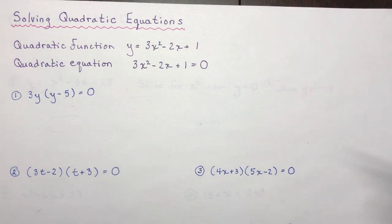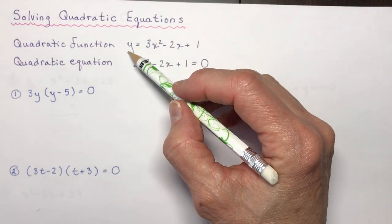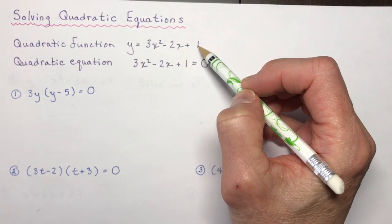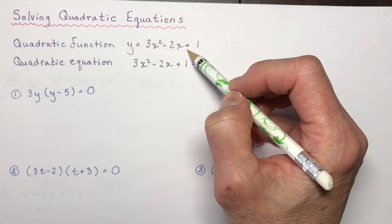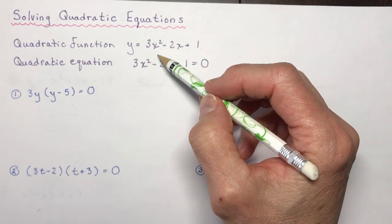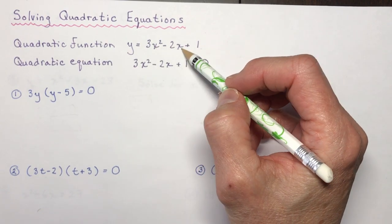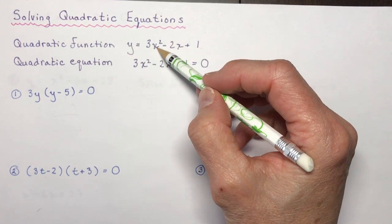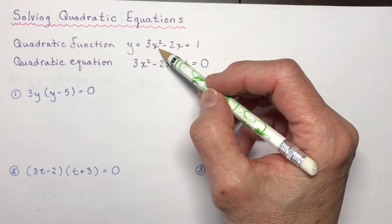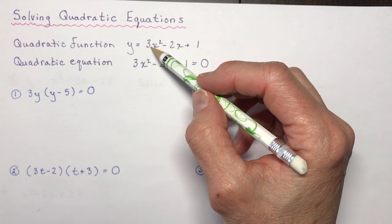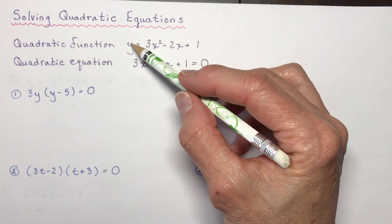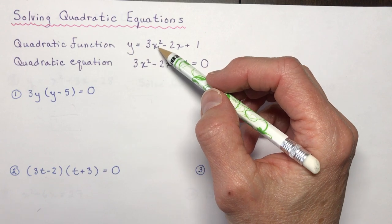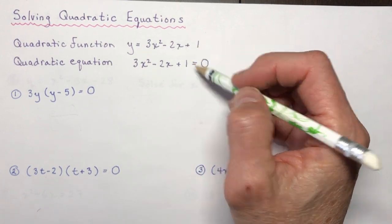When you have a quadratic function, you have y equals something. y is equal to this side of the equation, which means I can put anything I want in for x and get an answer for y. I could put in 1 and get 3 minus 2 plus 1, or a hundred, a thousand, a billion and get an answer for y. Those are the points defining the shape of the parabola.